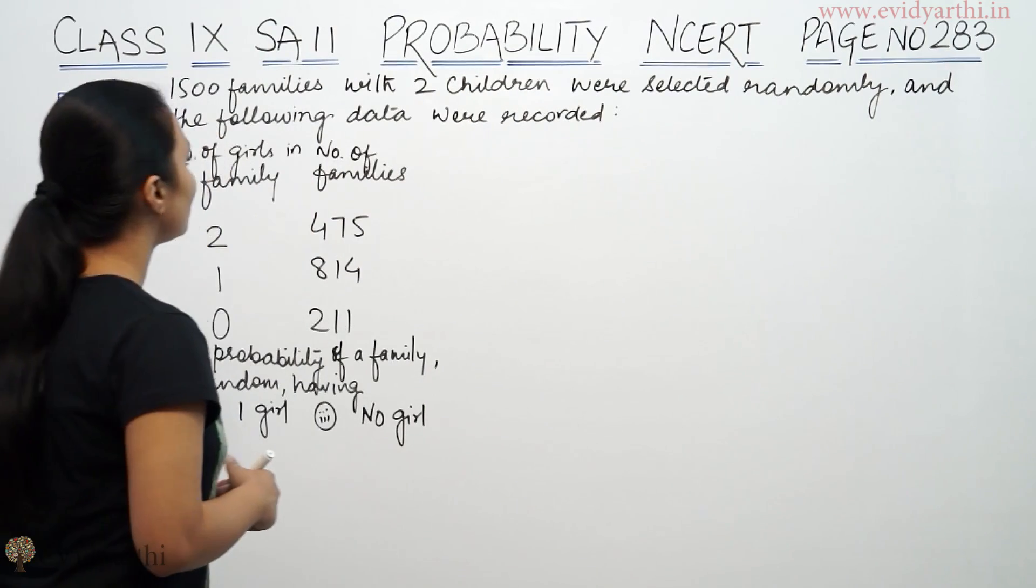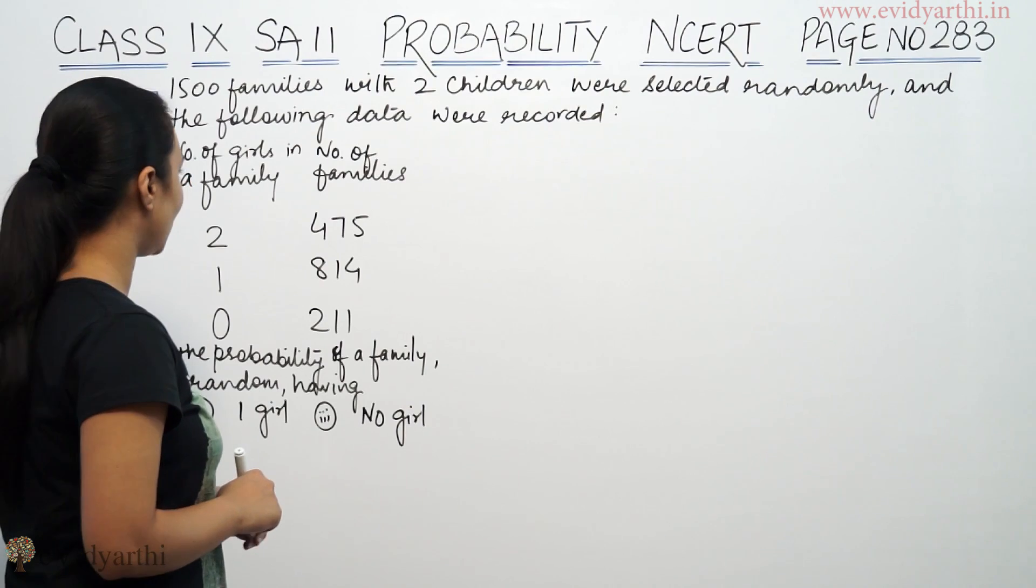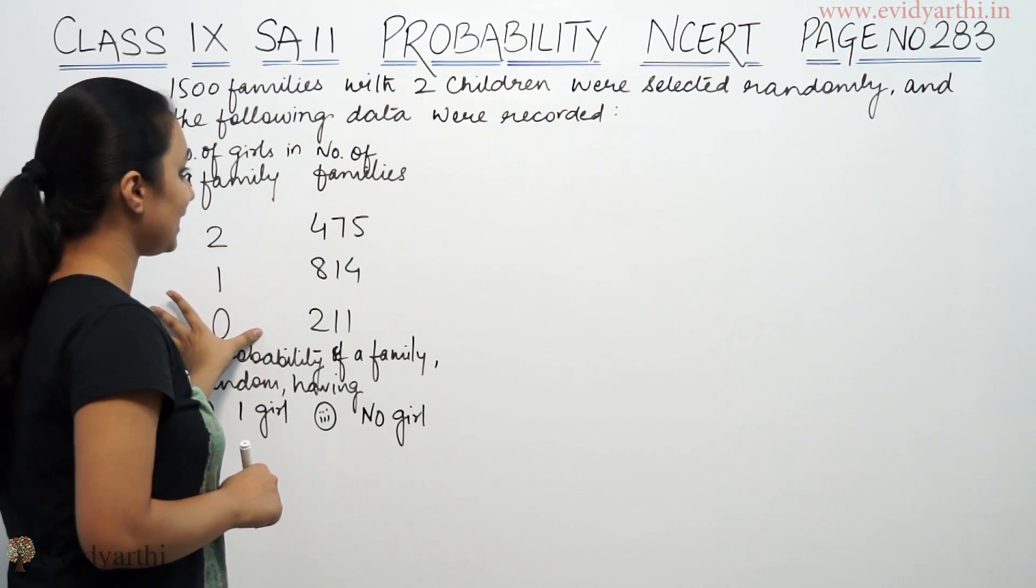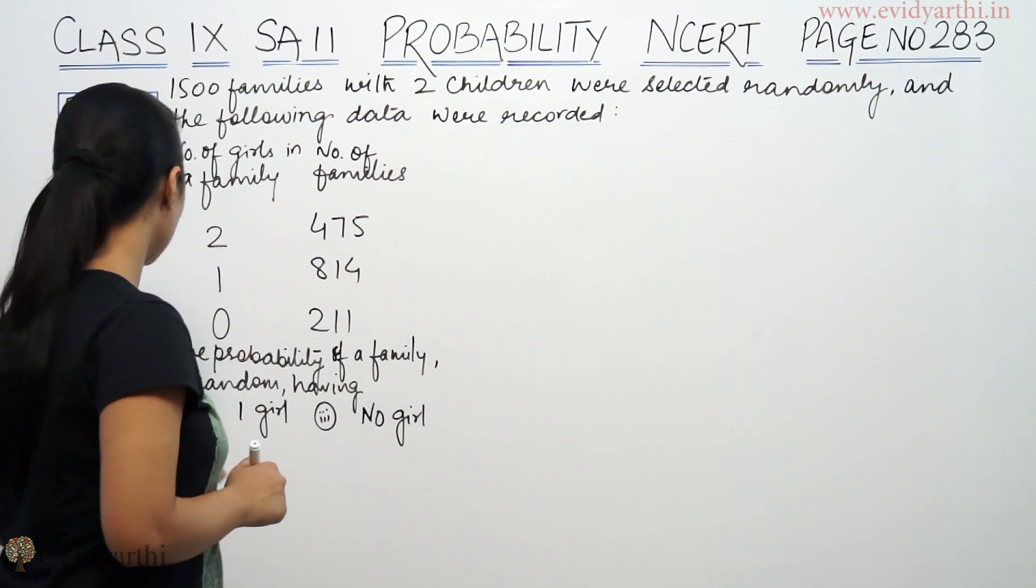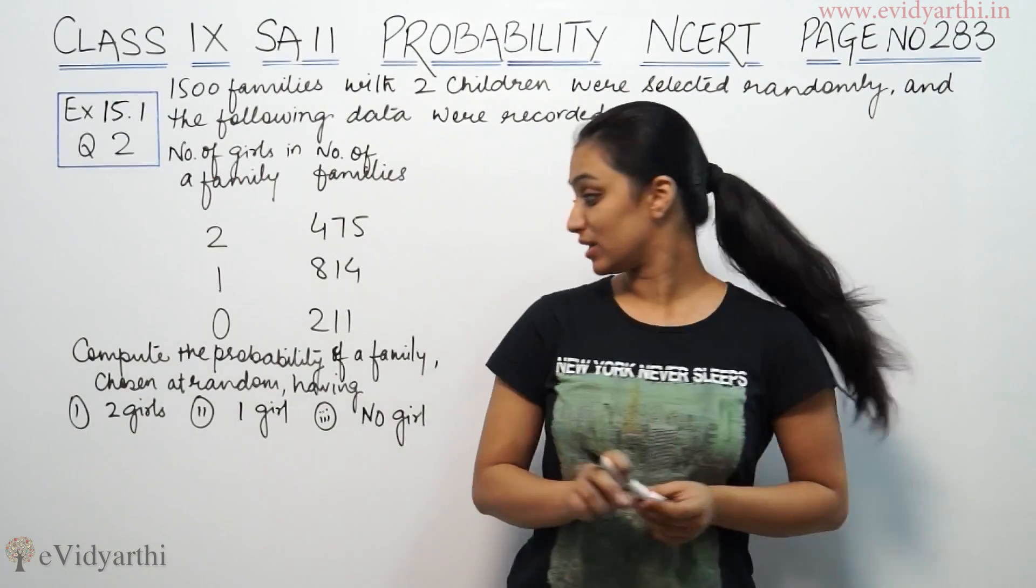1500 families with 2 children were selected randomly, and the following data were recorded. The number of girls in a family is given and how many families is given. Compute the probability of a family chosen at random having 2 girls.